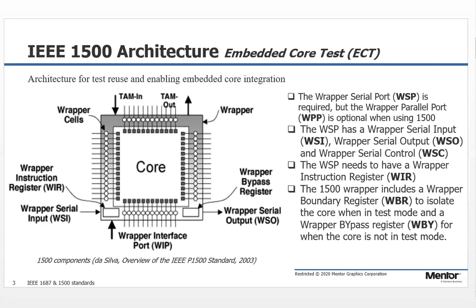First, with IEEE 1500 architecture, which talks about embedded core test, it's used for test reuse and enabling embedded core integration. It uses a wrapper serial port, but the wrapper parallel port is optional when using 1500. The wrapper serial port has a wrapper serial input, a wrapper serial output, and a wrapper serial control. The wrapper needs to have a wrapper instruction register, which is the WIR.